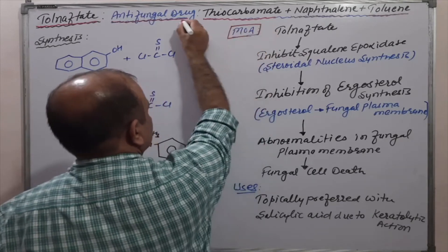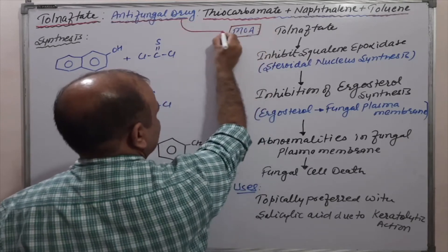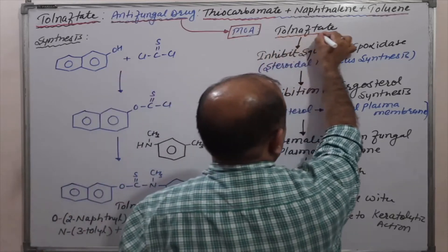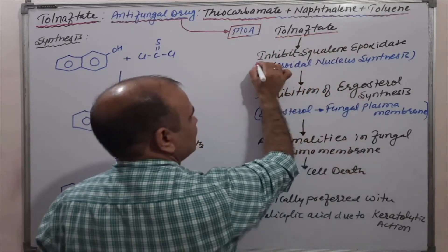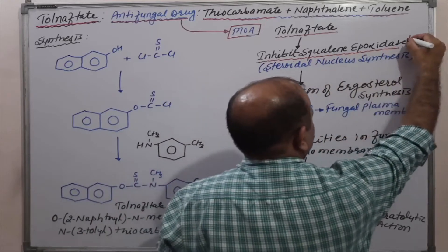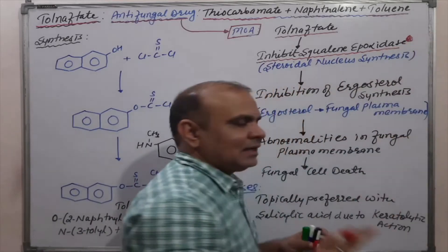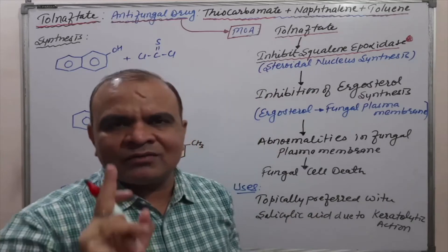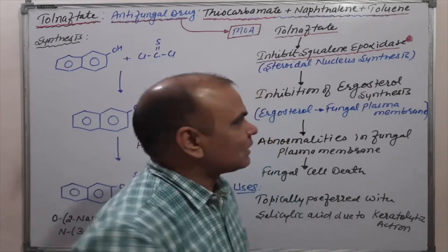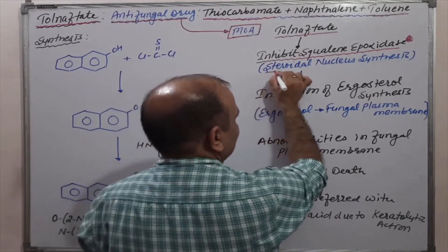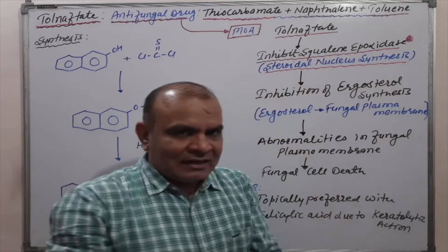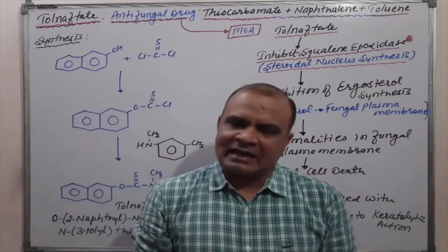Before going to the structure of tolnaftate, we must discuss the mechanism of action — how it acts as an antifungal drug. Tolnaftate inhibits the squalene epoxidase enzyme. That squalene epoxidase enzyme is responsible for the synthesis of the steroidal nucleus — specifically, it is responsible for the cyclization of the steroidal nucleus.